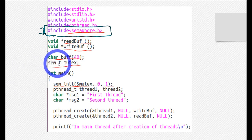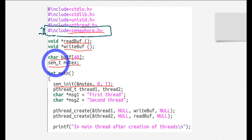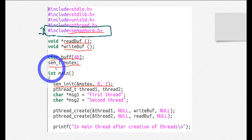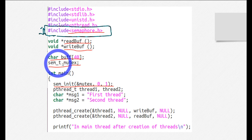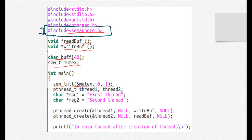I have declared the semaphore variable as a global variable. The data type of the semaphore variable is sem_t, and I have named it mutex. This is the second step.